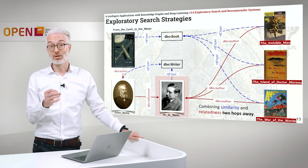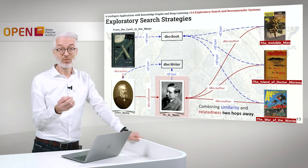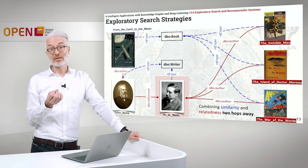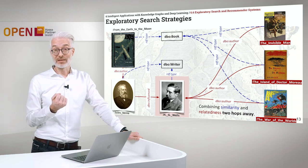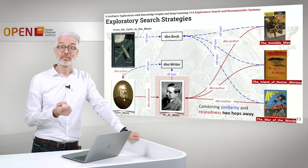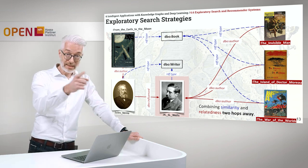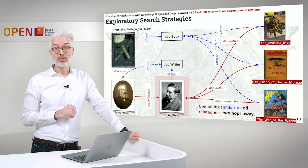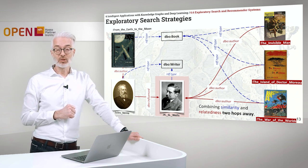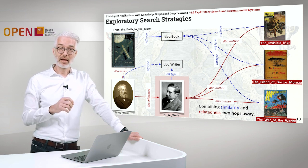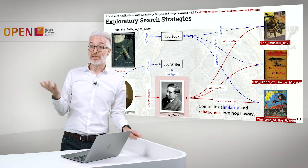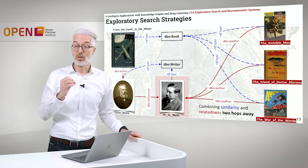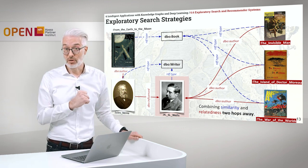There might be many other things related and similar to your original search, and you can get a nice tour through the entire search space of things which are available and which lie nearby to what you were originally looking for. You can also create direct explanations — not only 'I recommend you something because it's similar,' but you get directly the path to the recommended object, which is a kind of explanation for why this recommendation in the exploratory search was created for you.